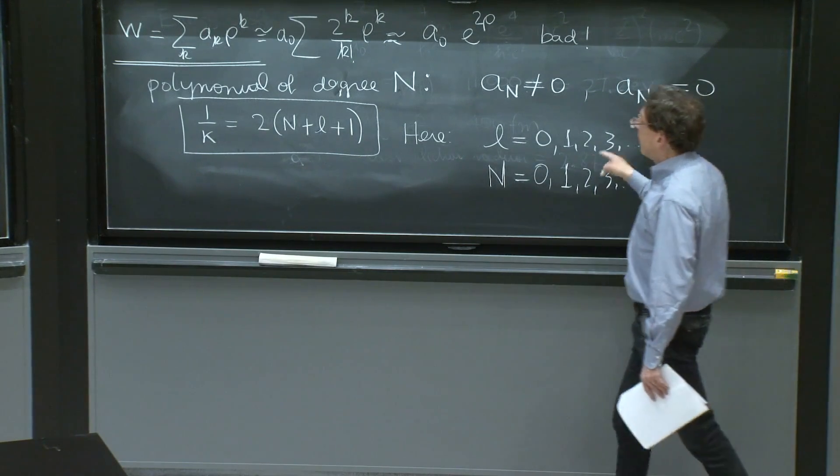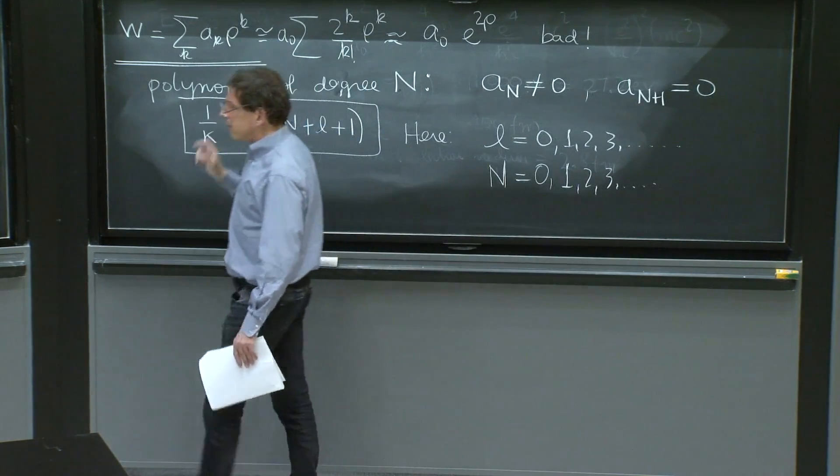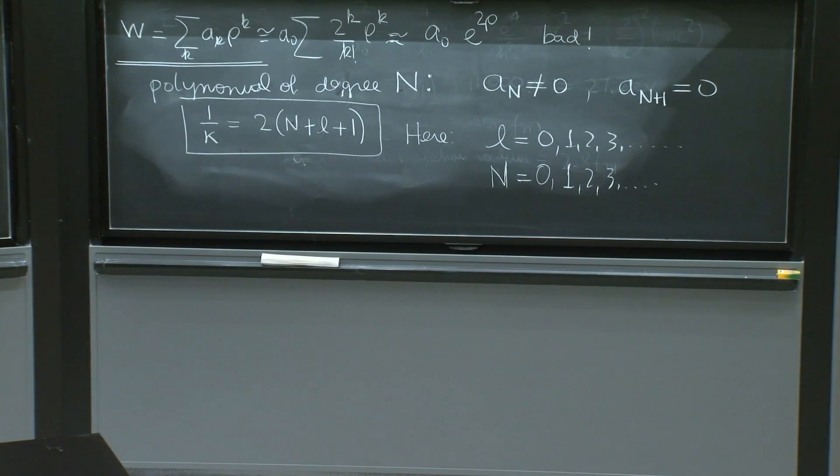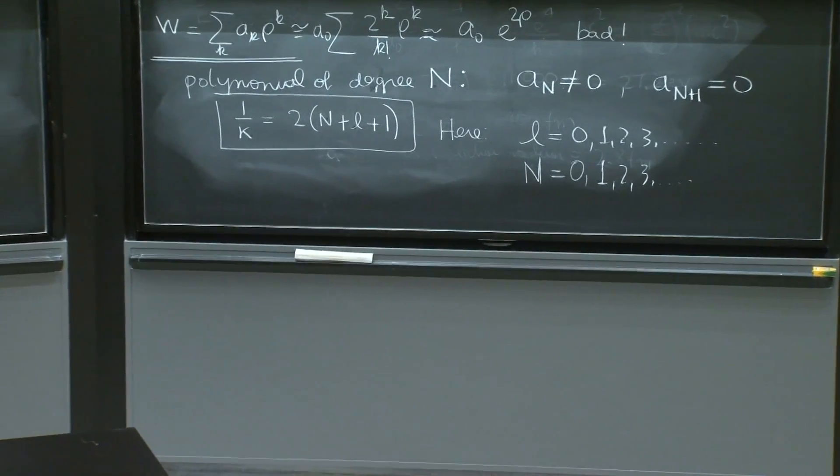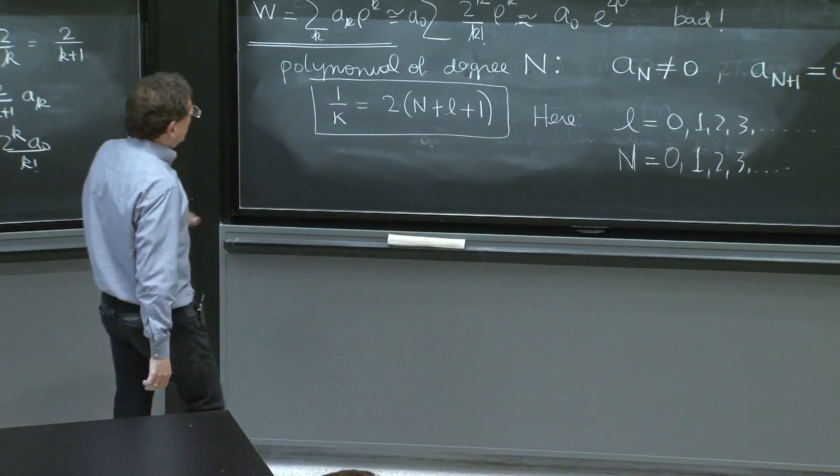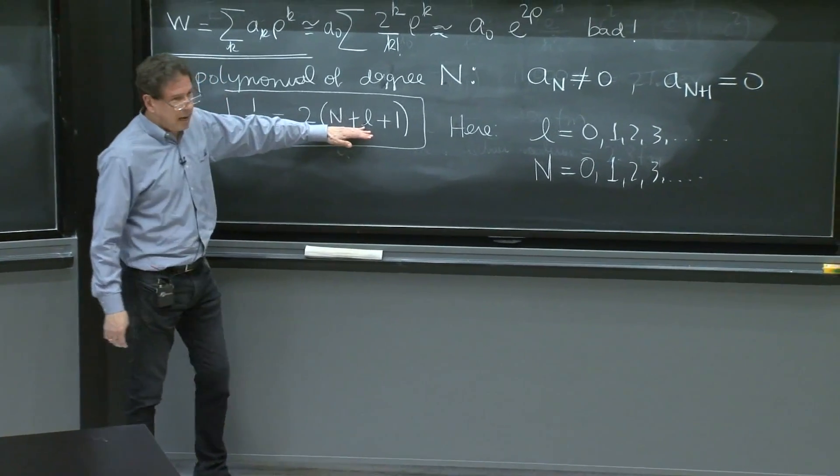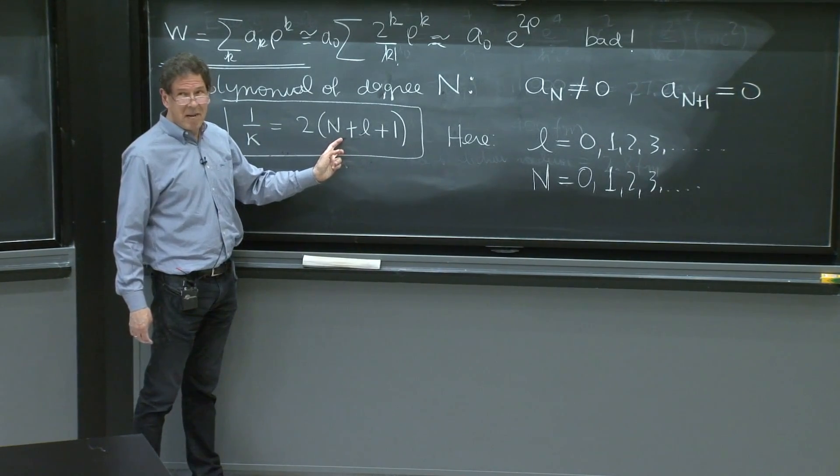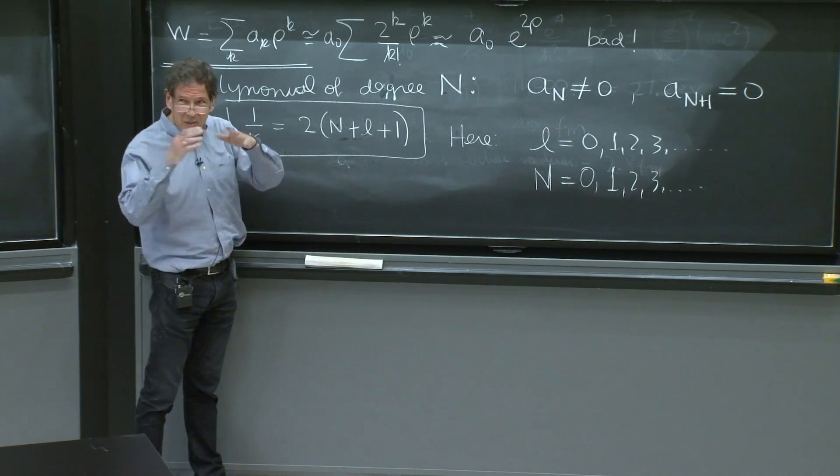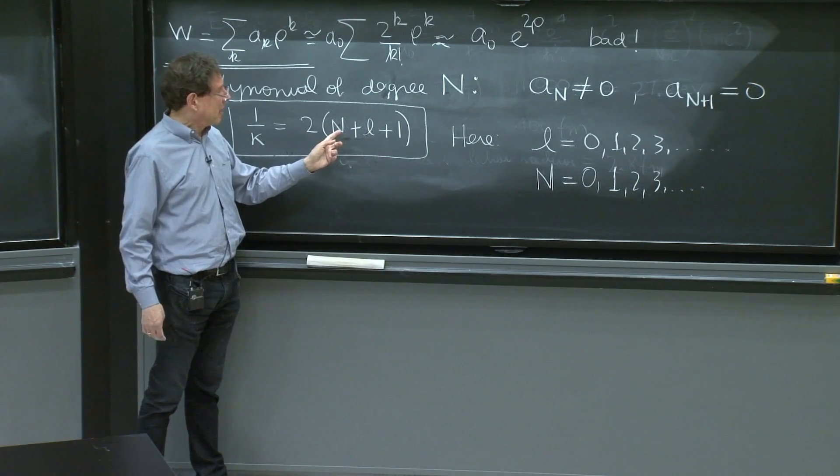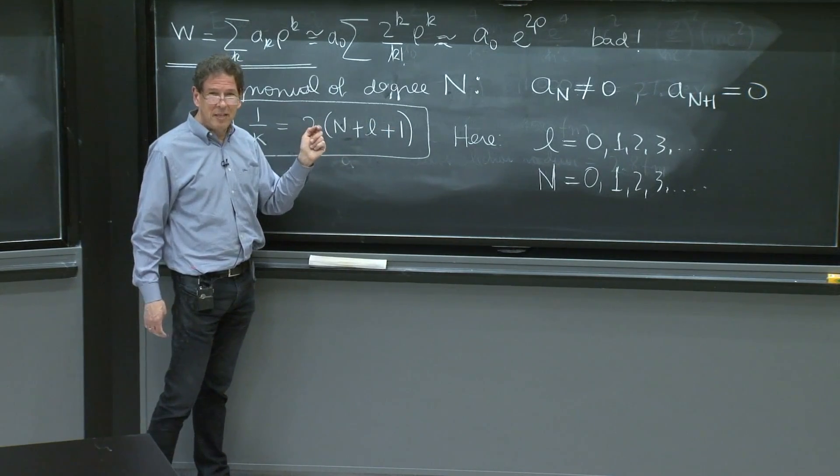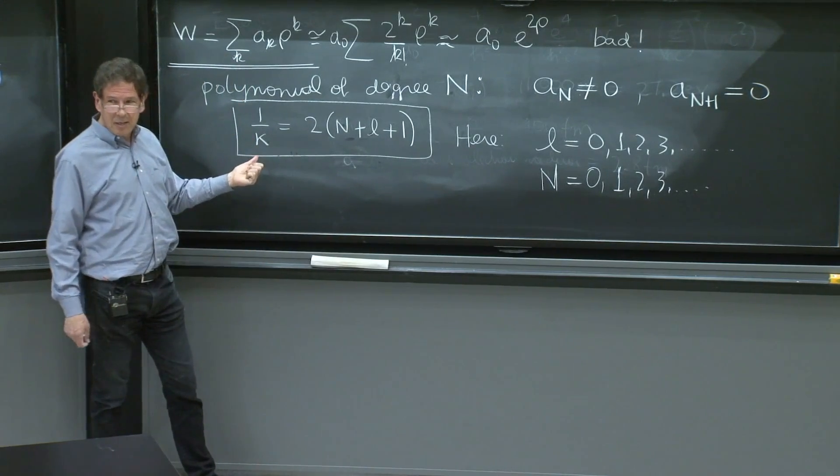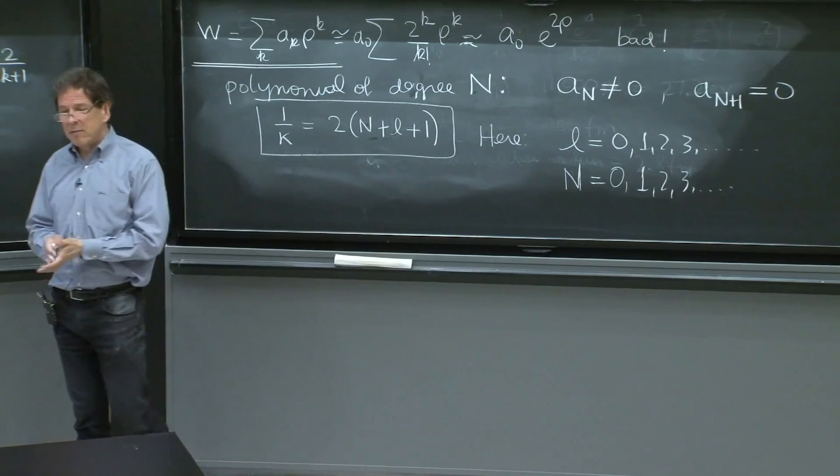And for each combination, we'll have some energy. But here you start to see degeneracies, multiple degeneracies. Because if you have the number 100,000 here, it can be built in many, many ways, 100,001 ways, or something like that, with two integers that have to add up to it. And all of them will have the same energy. So the hydrogen atom is going to have lots of degeneracy.